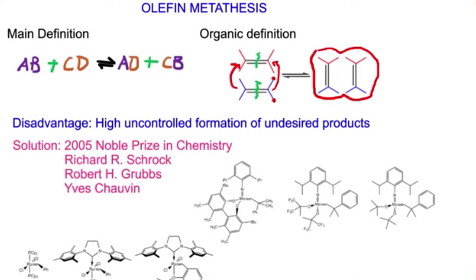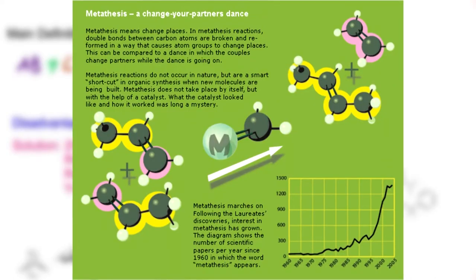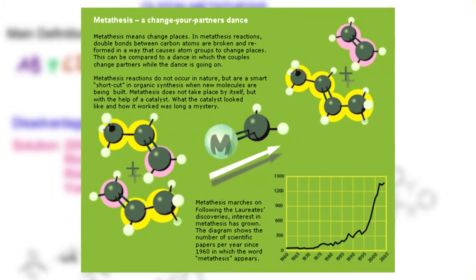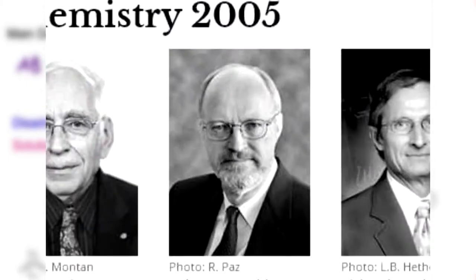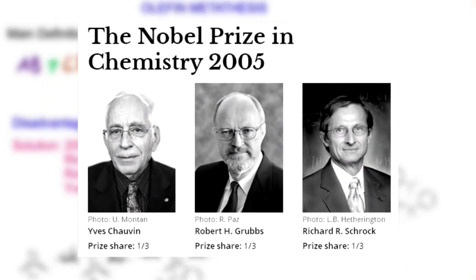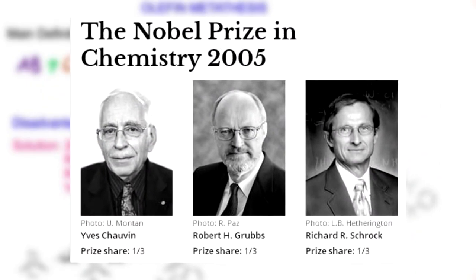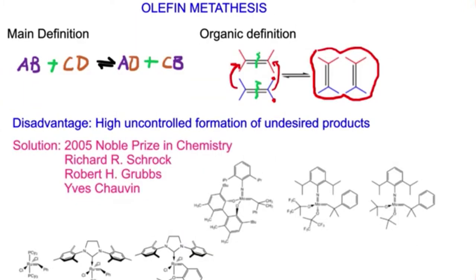This leads to a disadvantage of this reaction because it shows how highly uncontrolled the formation of the undesired product is, which is commercially not favorable. To make this a commercial success, a solution was proposed — recognized by the 2005 Nobel Prize in Chemistry — where three scientists were able to propose various interesting catalysts and a mechanism to facilitate the formation of desired products.